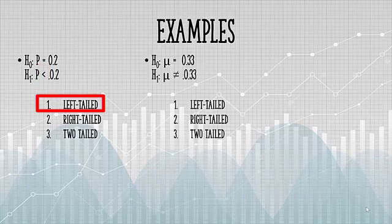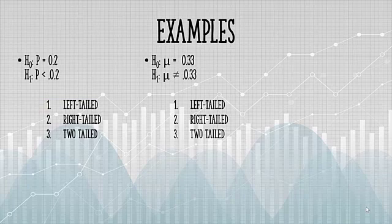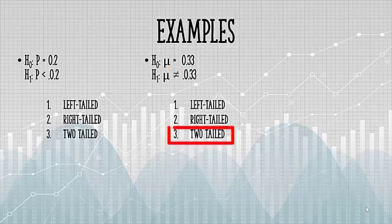In this next example, the sign of the alternate hypothesis is not equals 2. And not equals sign means it's a two-tailed test.